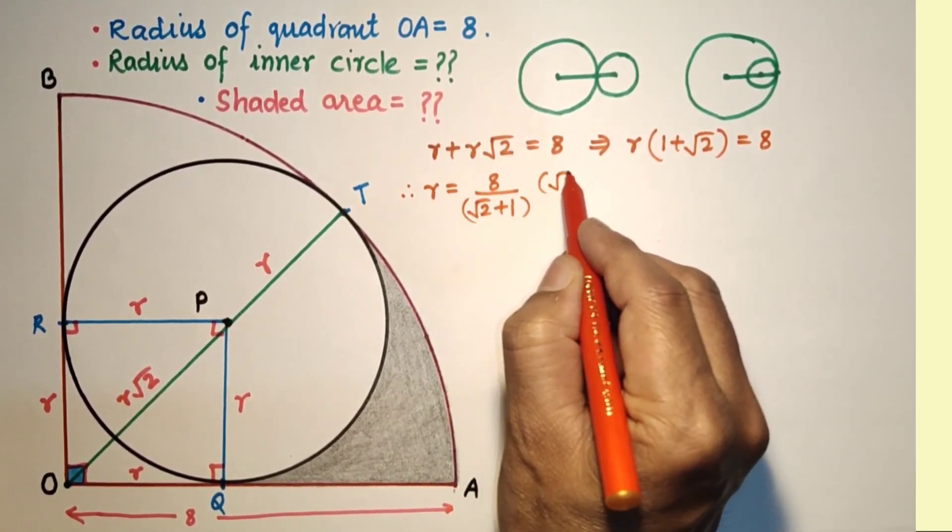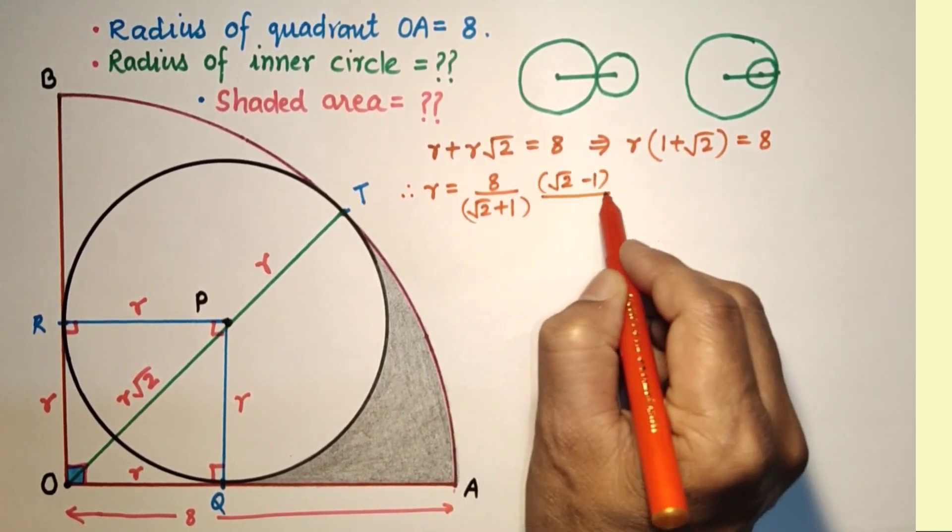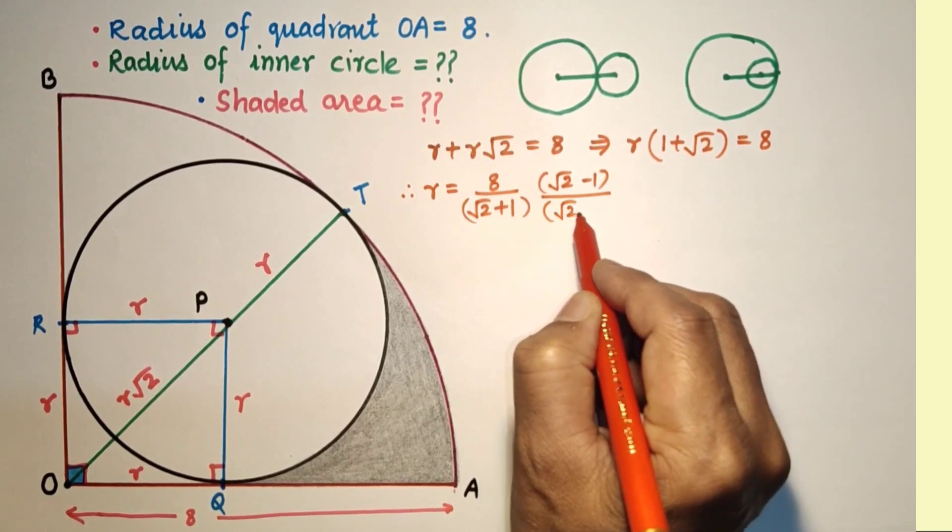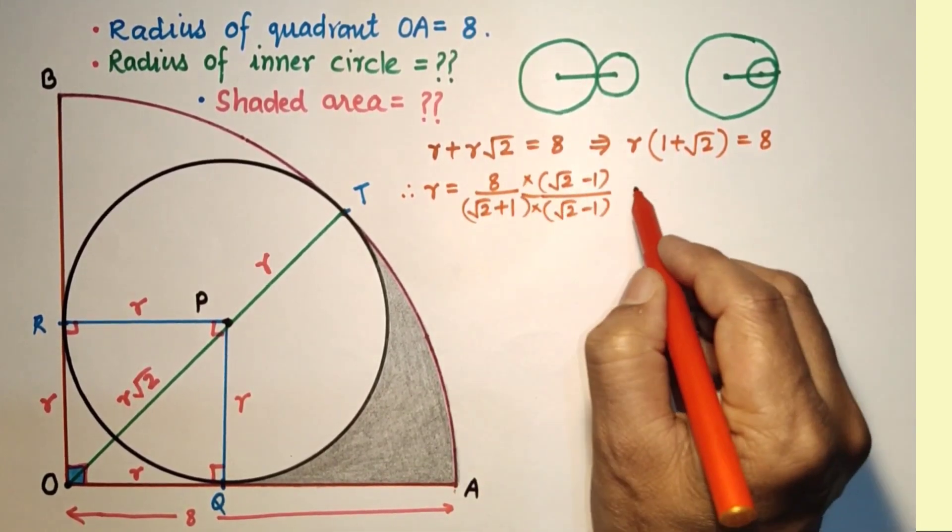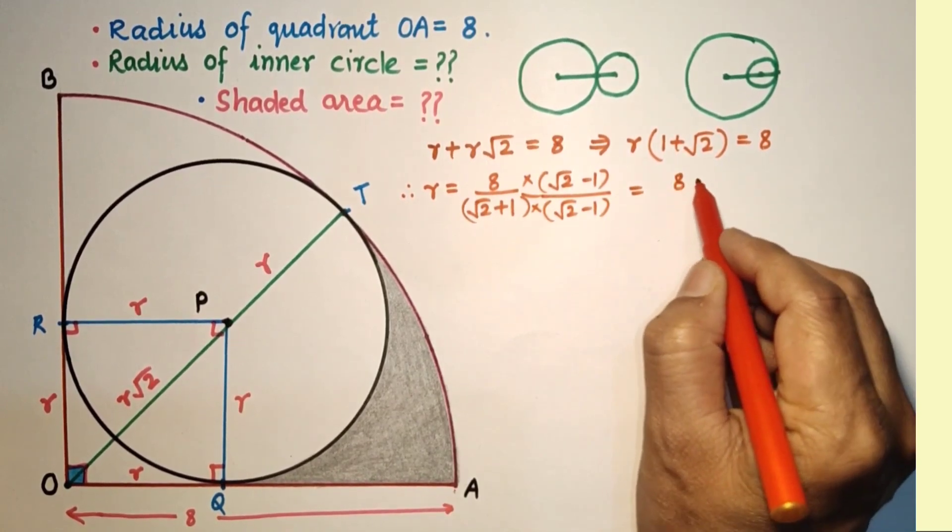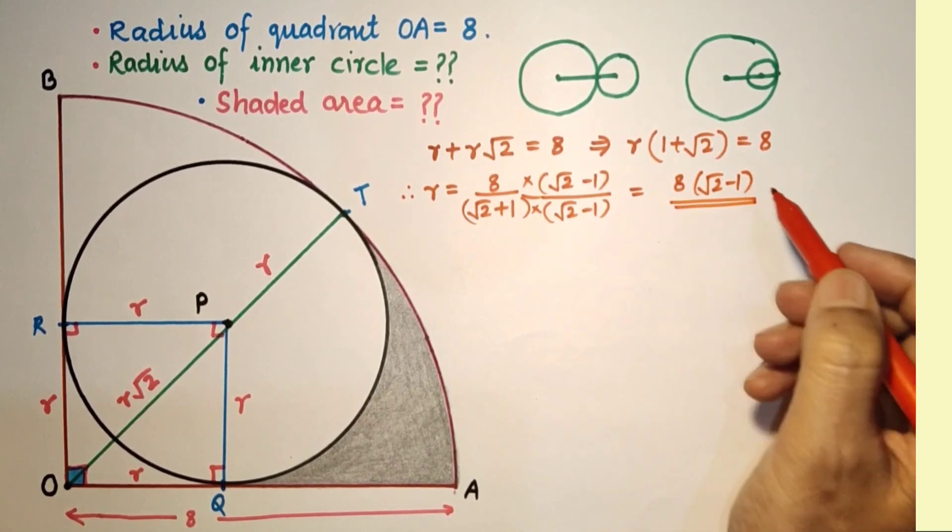Rationalizing the denominator by multiplication with its conjugate. So we are getting (√2 - 1) by 1. This is the radius.